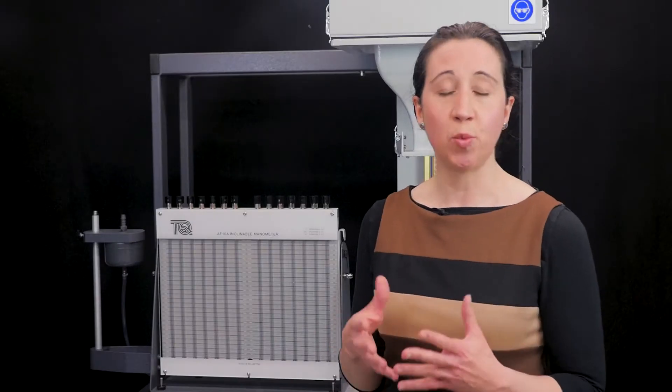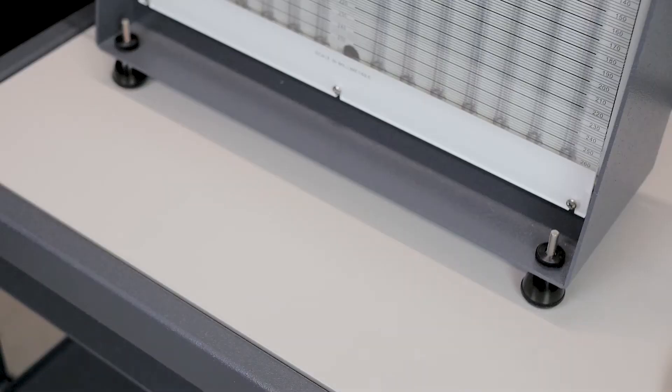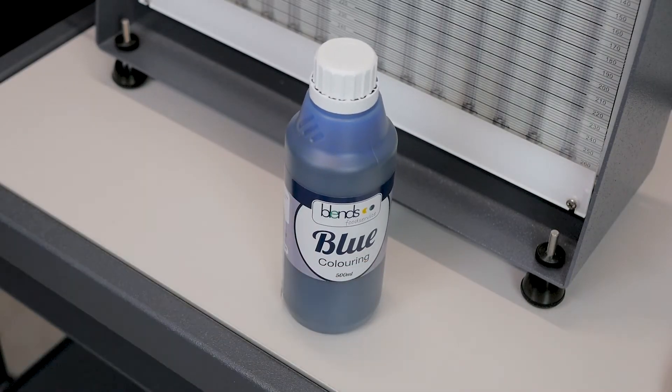The manometer uses water as its working fluid and has a scale calibrated in millimeters to give a direct reading of pressure in millimeters of water. The colored dye that is supplied is added to the water so that you can see the water levels really clearly.